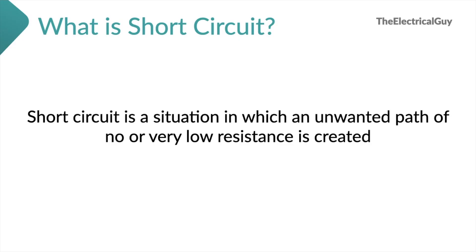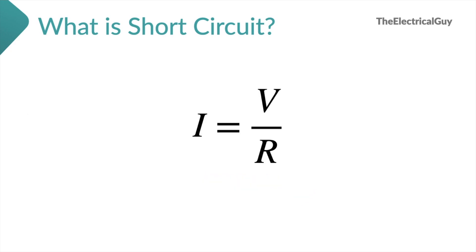Short circuit is a situation in which an unwanted path of no or very low resistance is created. When a short circuit occurs, the resistance of the circuit becomes very low or almost zero. As the resistance drops, current increases — this is where Ohm's law comes into the picture. As per Ohm's law, current is inversely proportional to resistance. So if resistance decreases, current will increase, and vice versa. Since the resistance has become very low, current greater than normal will start flowing through the circuit, and this high current will cause damage to the system and equipment.